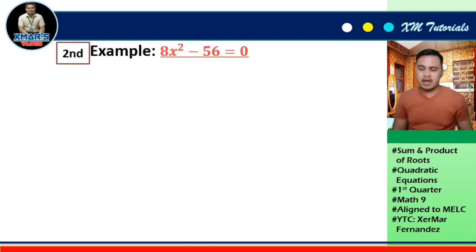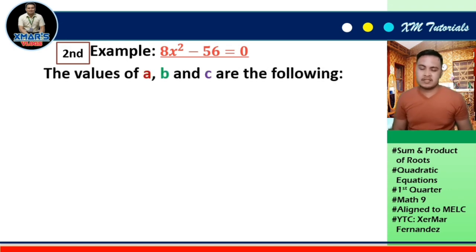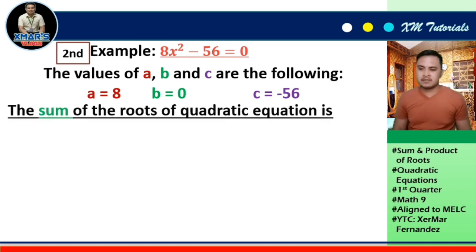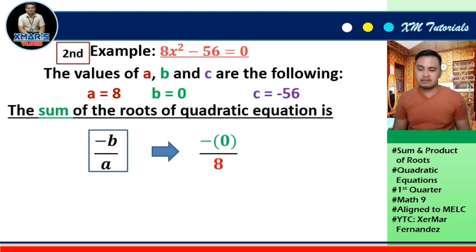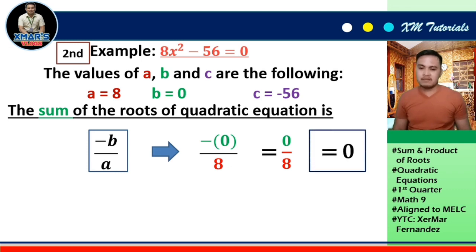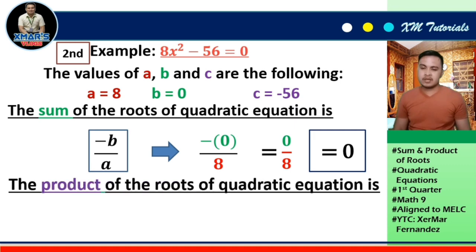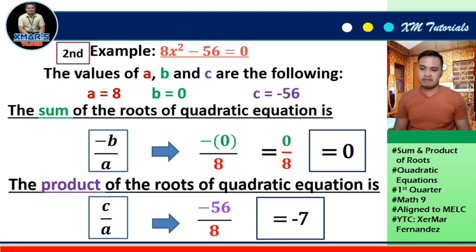Second example: 8x² - 56 = 0. The values are a = 8, b = 0, c = -56. Sum of roots = -b/a = -0/8 = 0. Therefore, the sum of the roots of 8x² - 56 = 0 is 0. Product of roots = c/a = -56/8 = -7. Therefore, the product of the roots is -7.